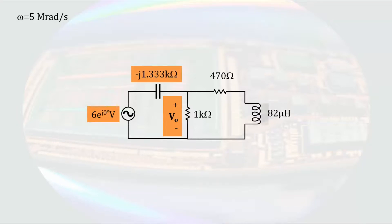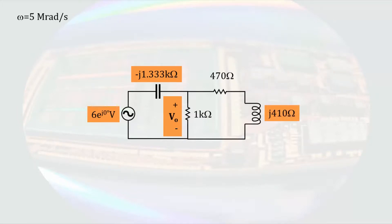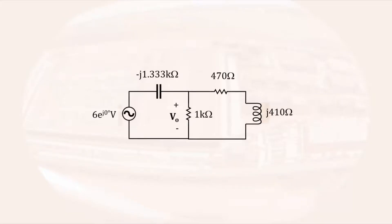That will result in an impedance of minus J 1.333 kilo ohms. Looking to the inductor, the impedance of an inductor is the complex number times the angular frequency times the inductance. This results in an impedance of J times 410 ohms. With all of our elements converted to the phasor domain, we can start node voltage analysis by identifying the nodes in the circuit. In this case, there are four nodes.